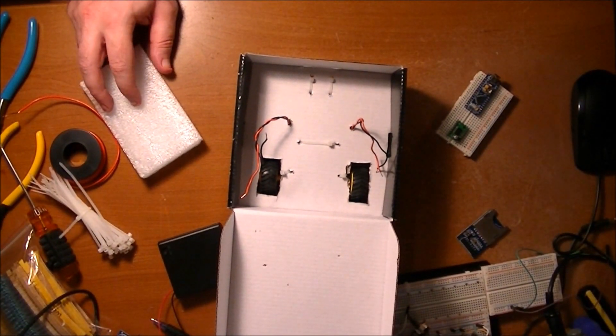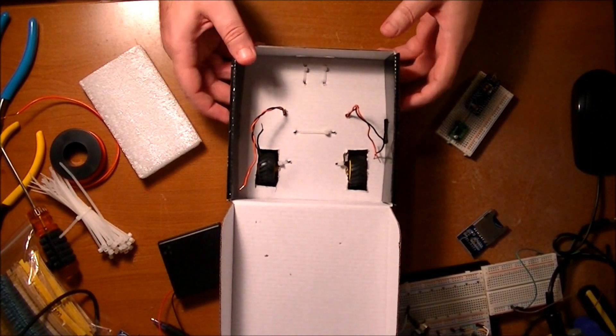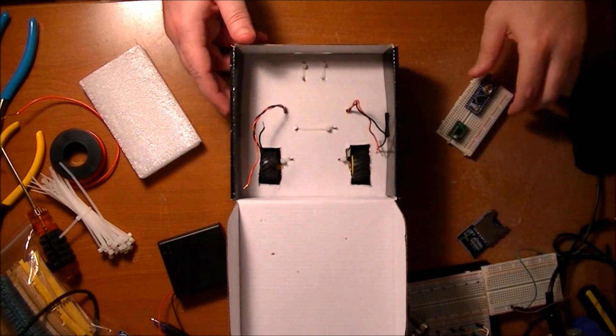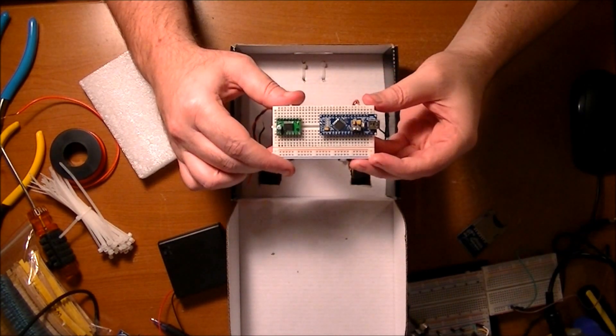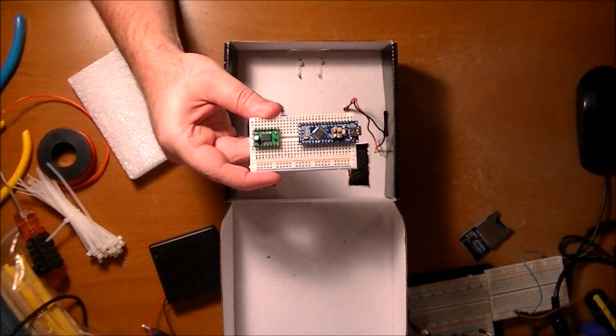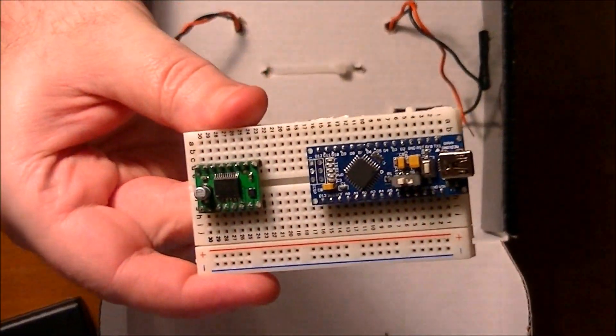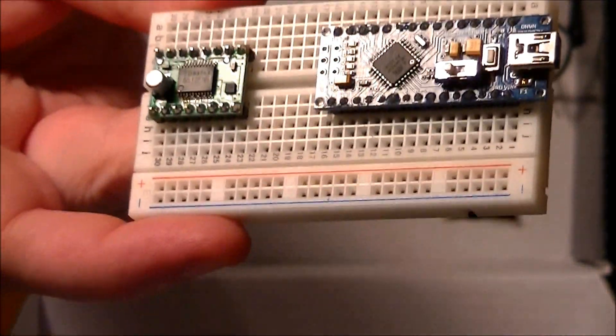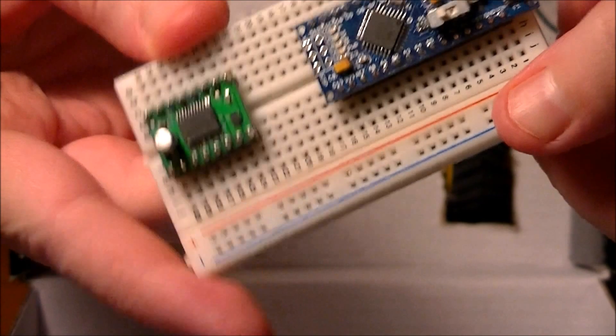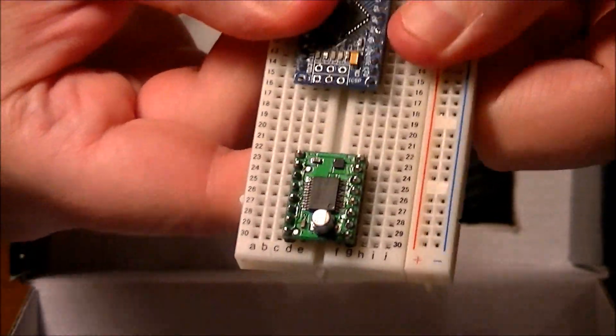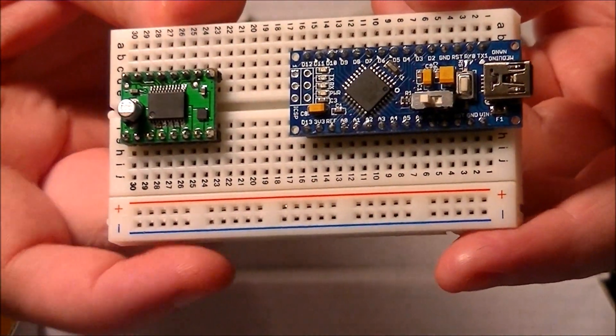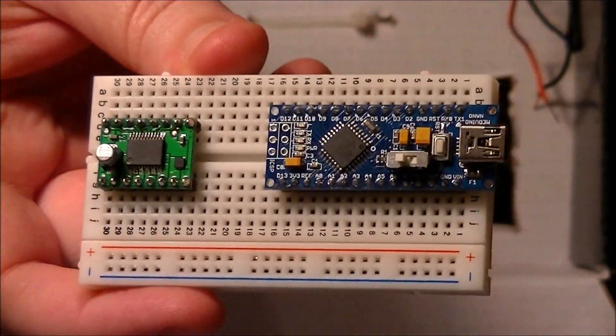Today we're going to be looking at placing some of the components inside of the bot. Basically what we're going to have is this small breadboard - I took one of the rails off just to save room but I still have a power rail here. In this particular build I'm going to use...